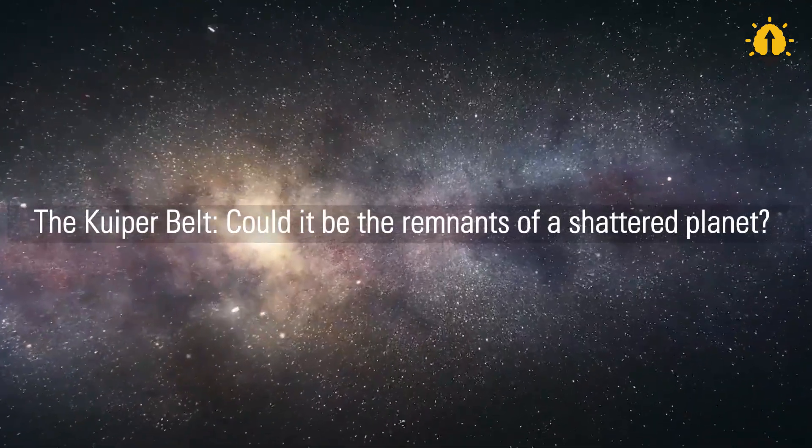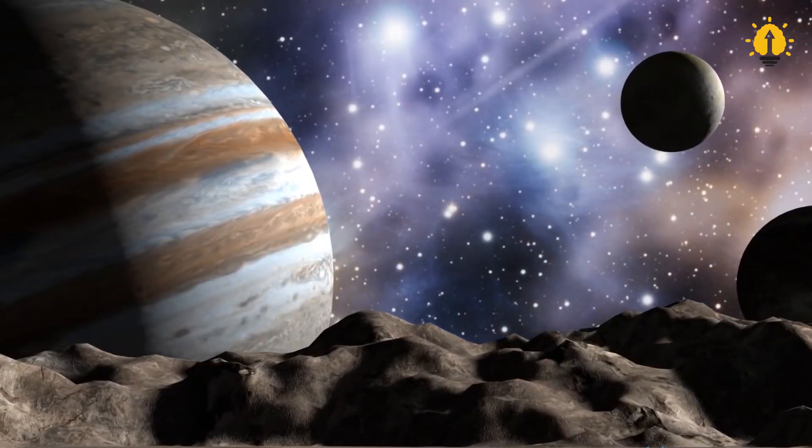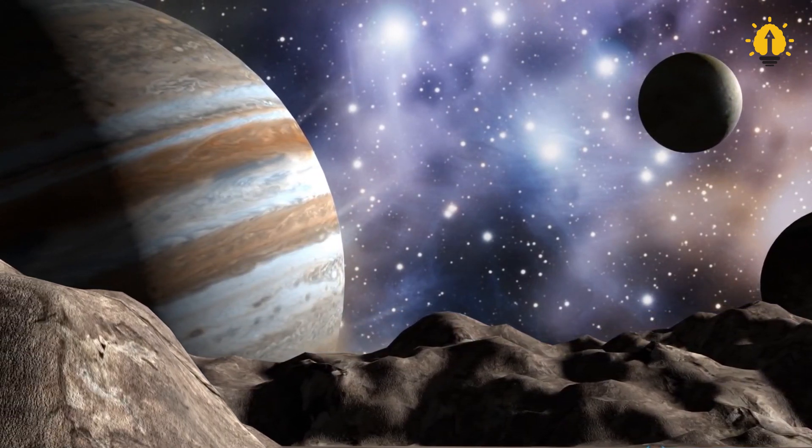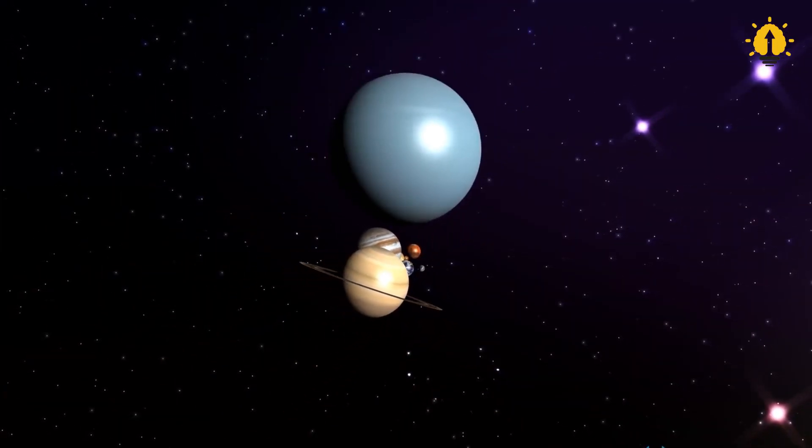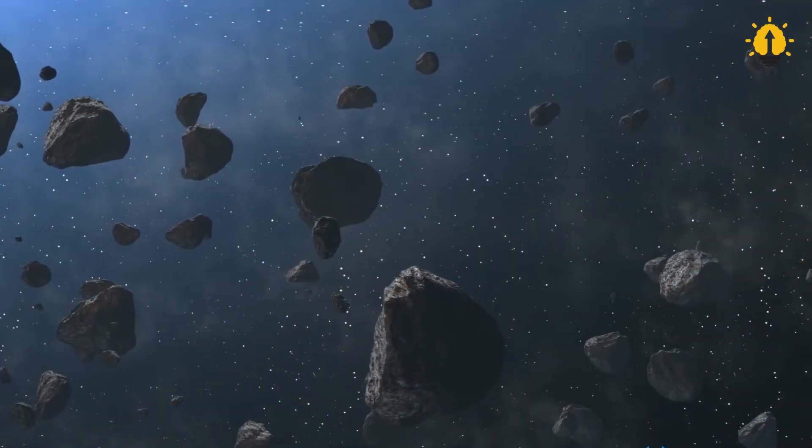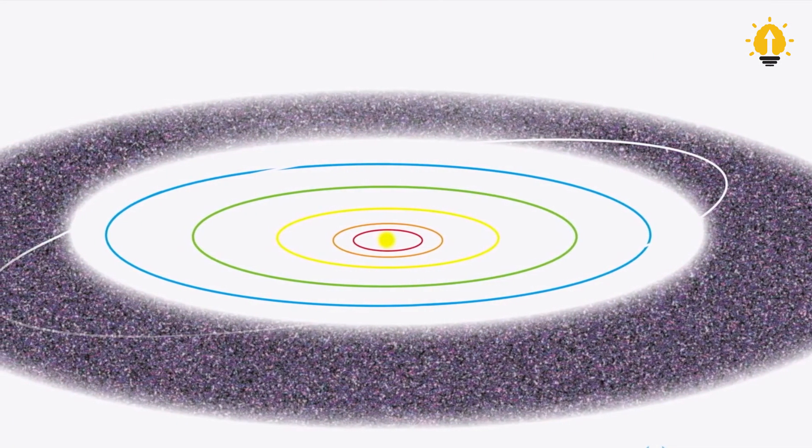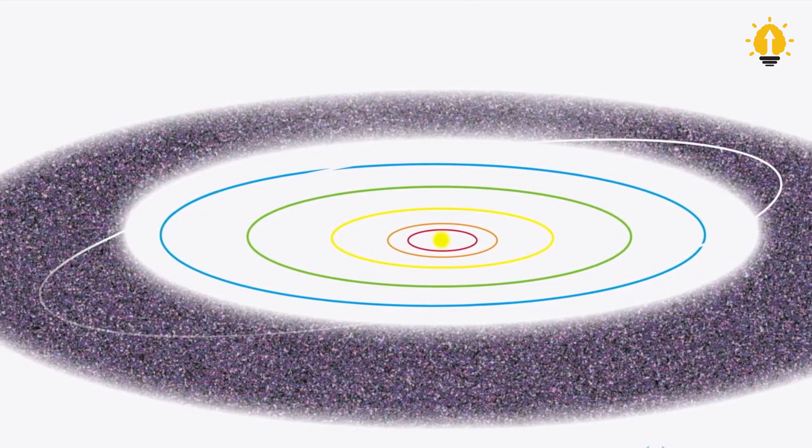The Kuiper Belt. Could it be the remnants of a shattered planet? It may sound like a sci-fi movie plot, but scientists believe that they have discovered something equally astonishing. Not just one, but multiple planets have vanished from our solar system. The evidence points towards the Kuiper Belt, a donut-shaped region beyond Neptune's orbit that is home to countless icy objects as being the remnants of a shattered planet.